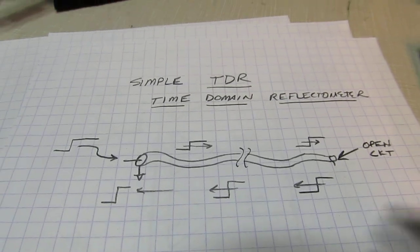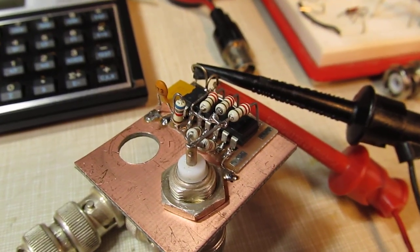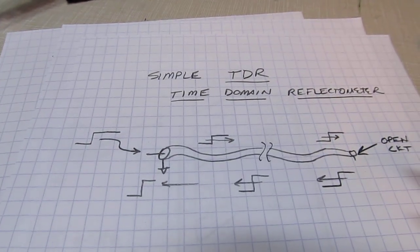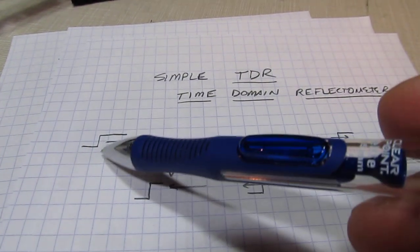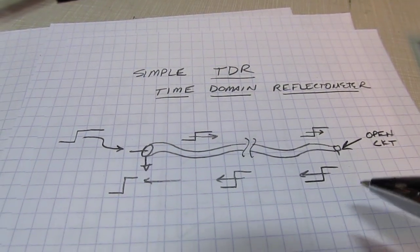The reason for building this circuit is that your average inexpensive function generator may not have fast enough edges to work effectively for this type of application, because you really want a very fast rising and falling edge.